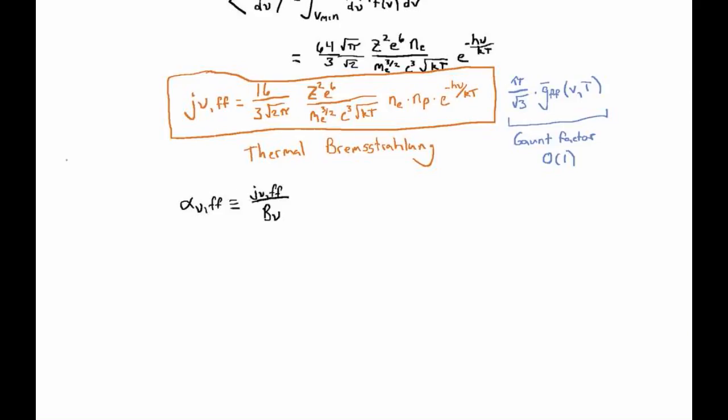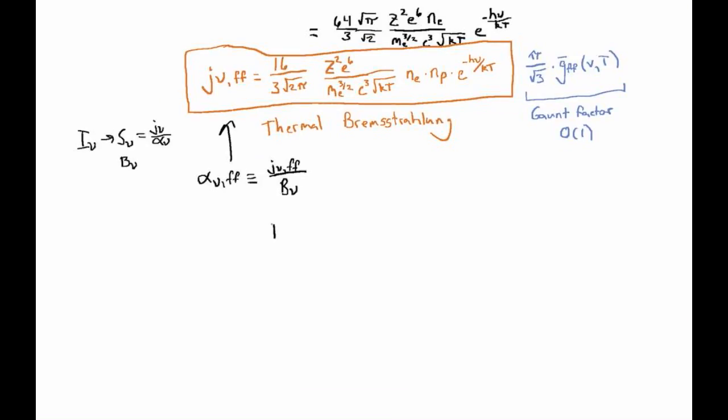Why do we divide by the Planck function? This is saying that we know in the optically thick case, the I sub nu should go to source function S sub nu, which is J sub nu over alpha sub nu. In the optically thick case for thermal radiation, that S sub nu is going to have to be B sub nu. So we essentially define the alpha such that this works out correctly. We've defined our absorption coefficient in terms of the emission coefficient for thermal Bremsstrahlung. This describes a reverse process known as inverse Bremsstrahlung.